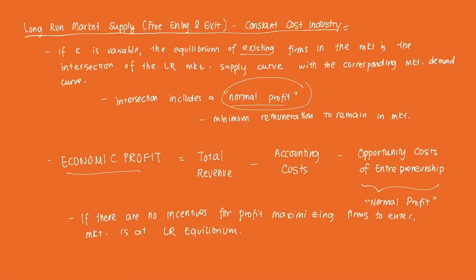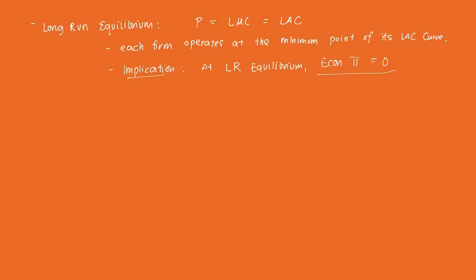If there are no incentives for profit-maximizing firms to enter or exit the industry, then the market is said to be in long-run equilibrium. That condition for long-run equilibrium occurs when price is equal to long-run marginal cost and equal to long-run average cost, and each firm operates at the minimum point of its own long-run average cost curve. The implication is that at long-run equilibrium, economic profit is zero.